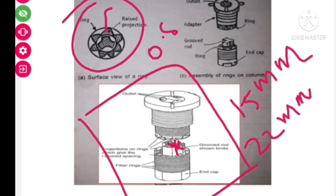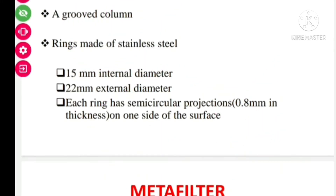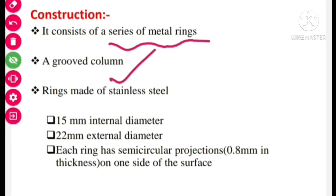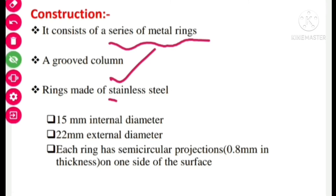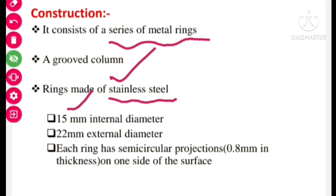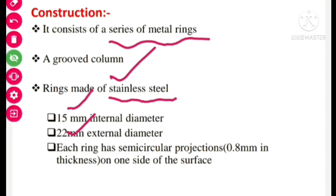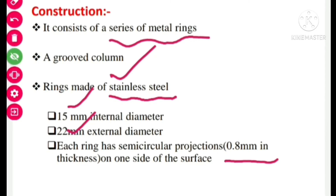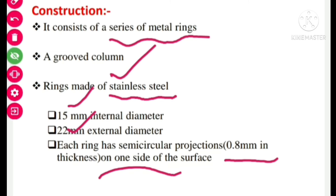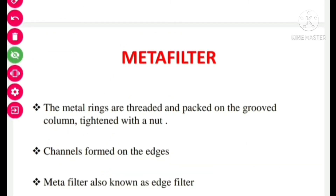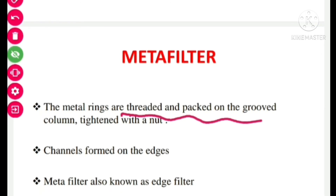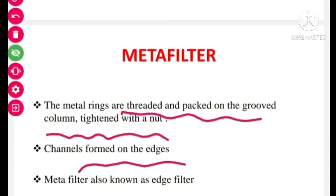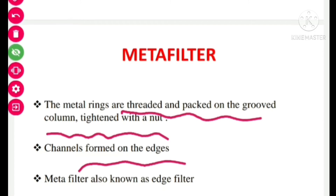Each ring has 0.8 mm thickness. There are a number of metal rings, and these metal rings are threaded and packed on the grooved column, then tightened with a nut, so that channels will be formed on the edges of the ring. Because of this reason, metafilter is known as edge filter.